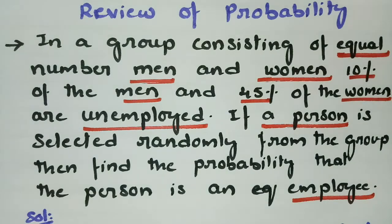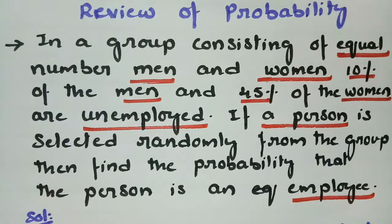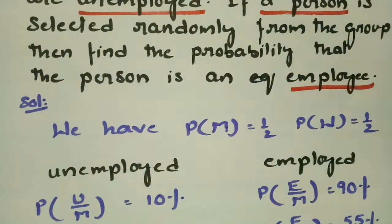There are men and women equally distributed, and 10% of the men and 45% of the women are unemployed. If a person is selected randomly from the group, find the probability that the person is an employee.